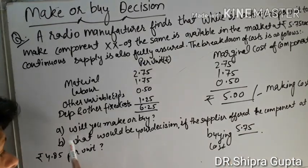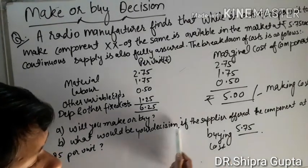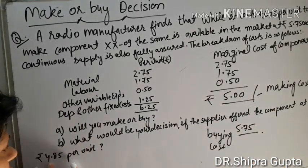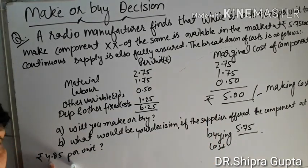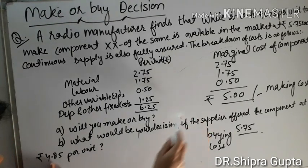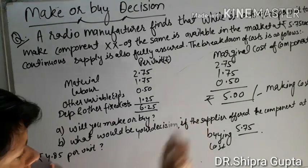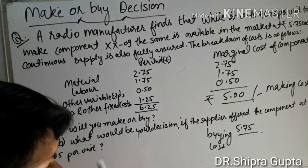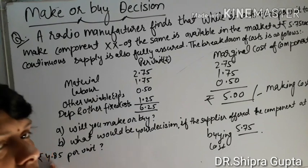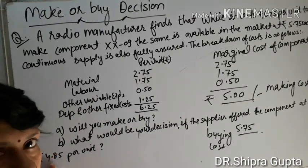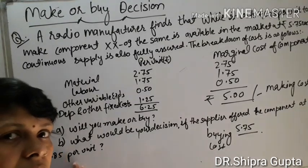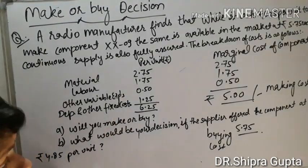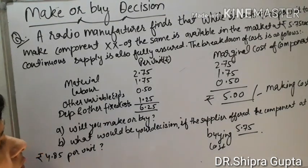In the second case: what is your decision if the supplier offers the component at ₹4.85 per unit? Our making price is ₹5.00 and the market price is ₹4.85, so the market price is cheaper. The difference is ₹0.15, so in this case we will not make the product — we purchase this component from outside and the saving is ₹0.15. We accept the proposal to purchase outside. Write this comment — it is most important. If you face any problem you can ask me. Thank you.